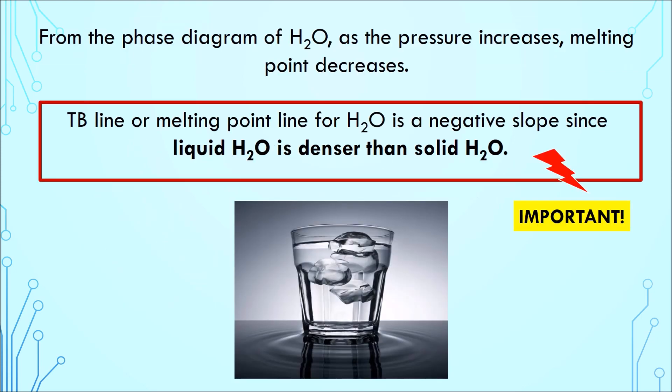Because, from the phase diagram of water, as the pressure increases, melting point decreases. The melting point line for water has a negative slope since liquid water is denser than solid water. As you all know, ice cubes float on liquid water.